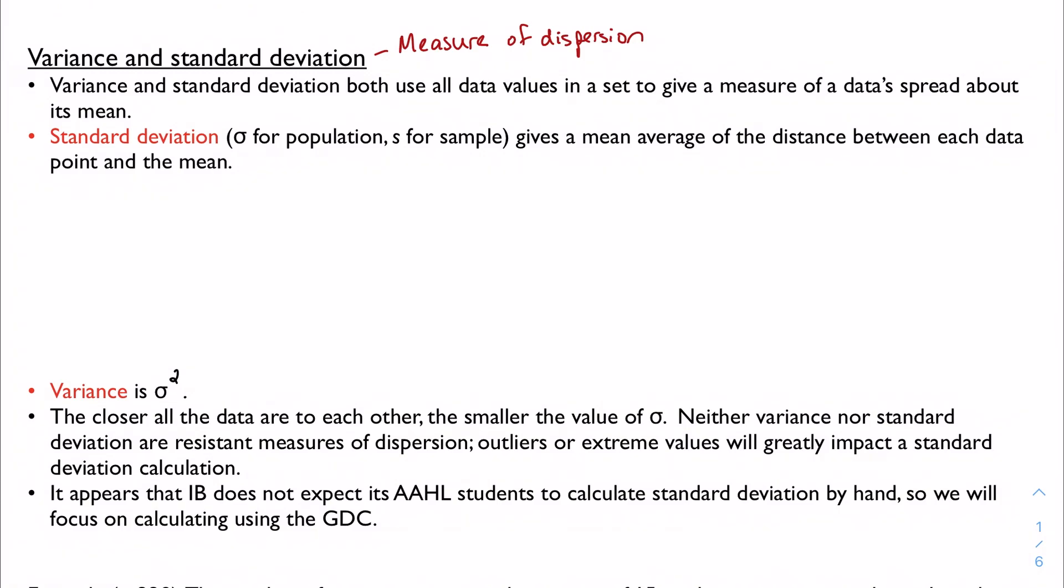This is a fancy way of saying roughly how far away from the mean is the data. Standard deviation does just that, and depending on if we're dealing with a population or a sample, we either have the Greek letter sigma, so this is the lowercase sigma, we have dealt with the uppercase one before, and s for sample. Standard deviation gives a mean average of the distance between each data point and the mean. So on average, how far away from the mean is the data that I'm working with?